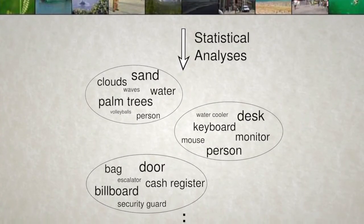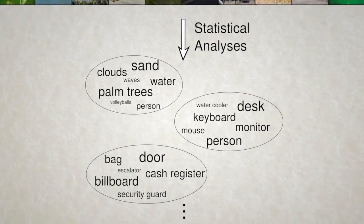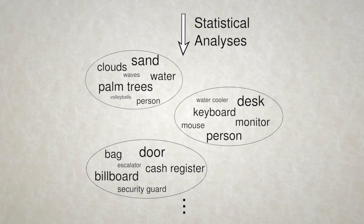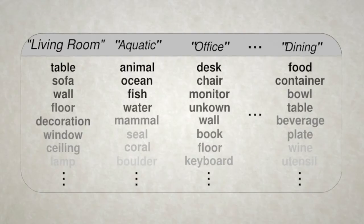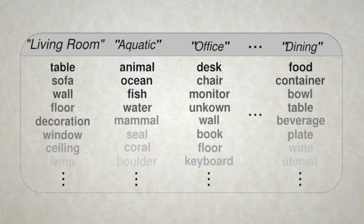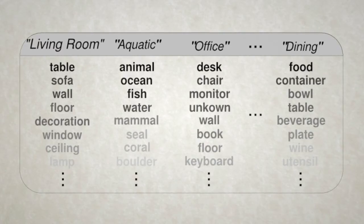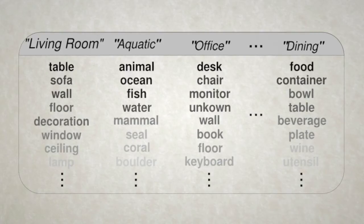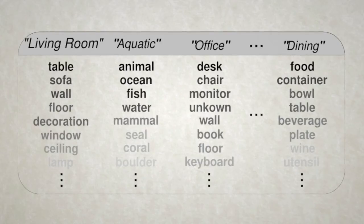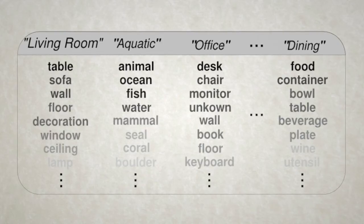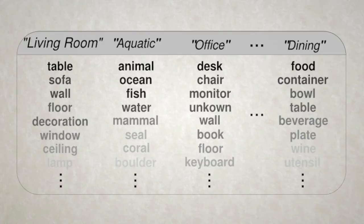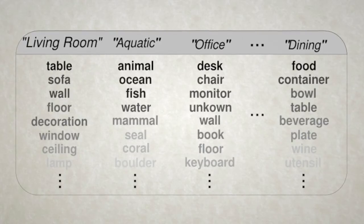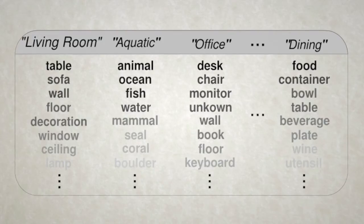Each identified category is defined as a set of probabilities over all the objects in the labeled images. Each probability gives the likelihood that the corresponding object occurs in a scene belonging to that category. Here we show a few examples of the categories identified by the algorithm. Each category is represented as a list of objects most likely to occur in scenes belonging to that category. Darker labels indicate objects that are relatively more likely to occur. Keep in mind that these categories are learned from the image labels alone — we give the algorithm no information regarding the type of categories it should learn. Even still, the categories identified are intuitive natural scene categories.